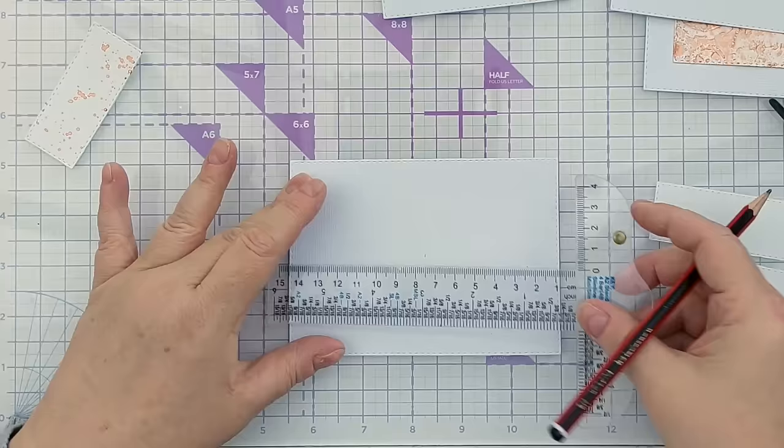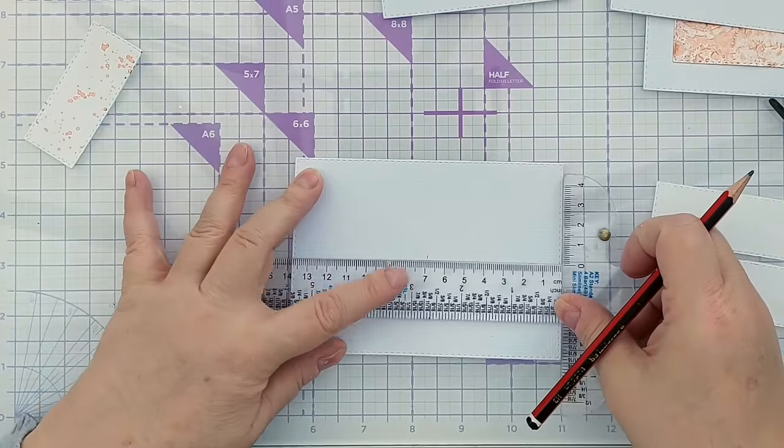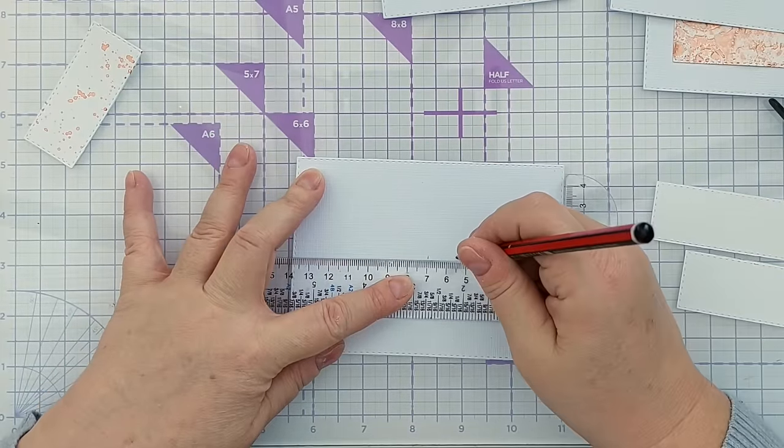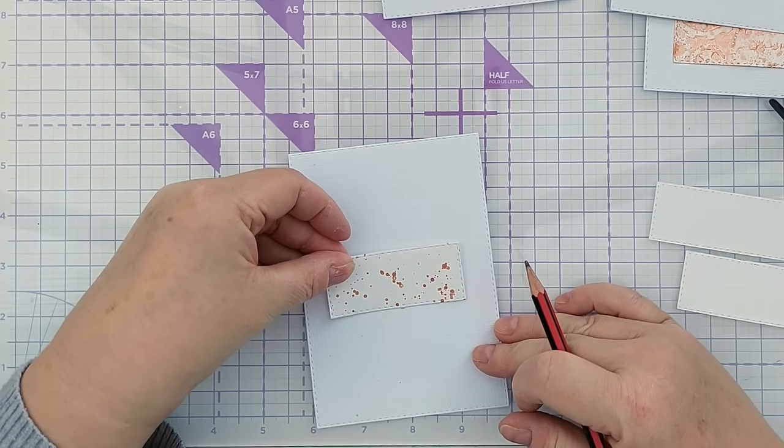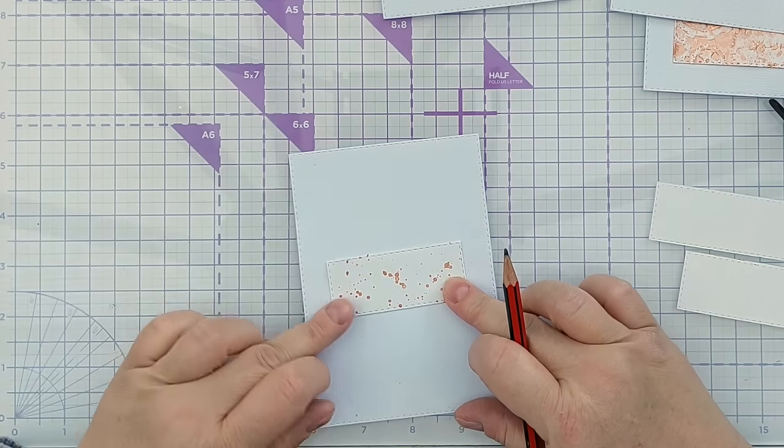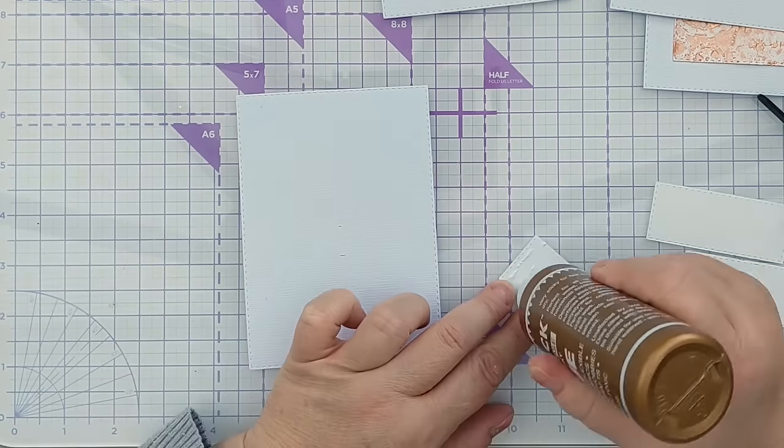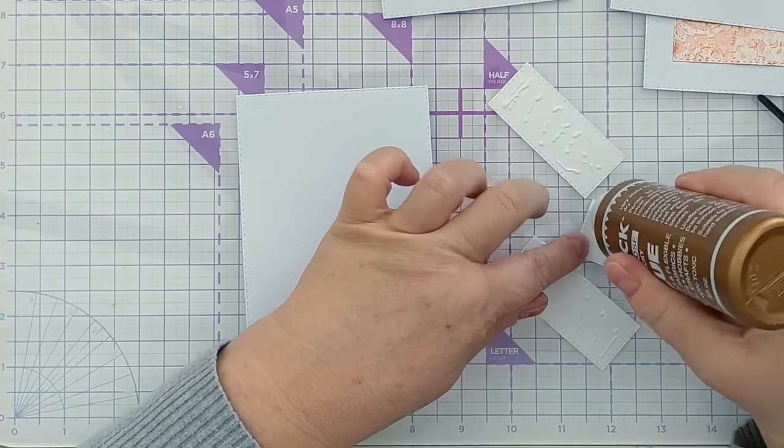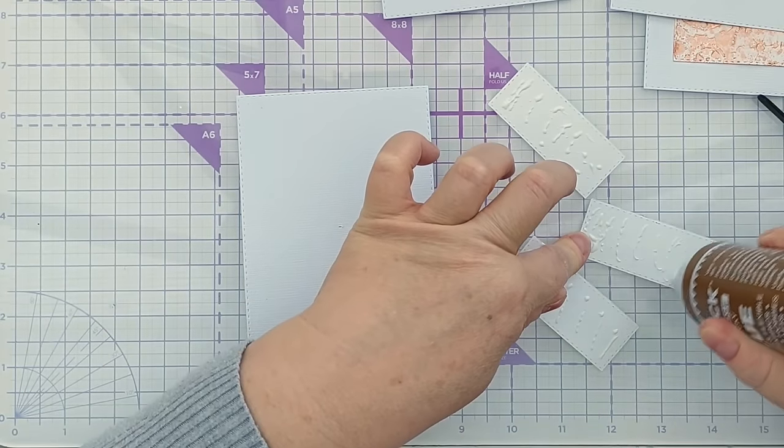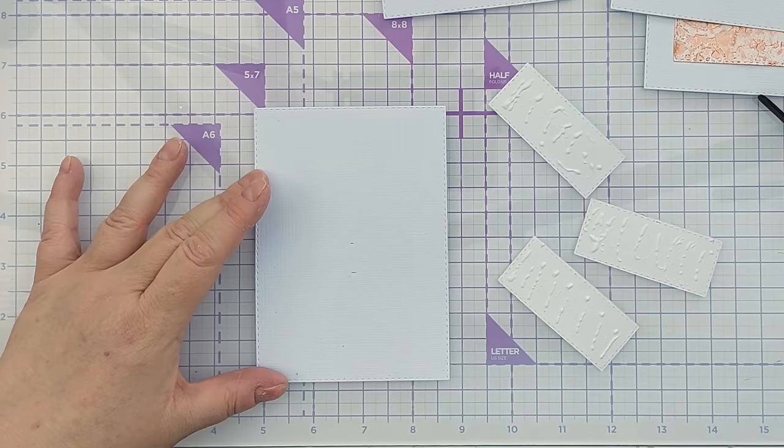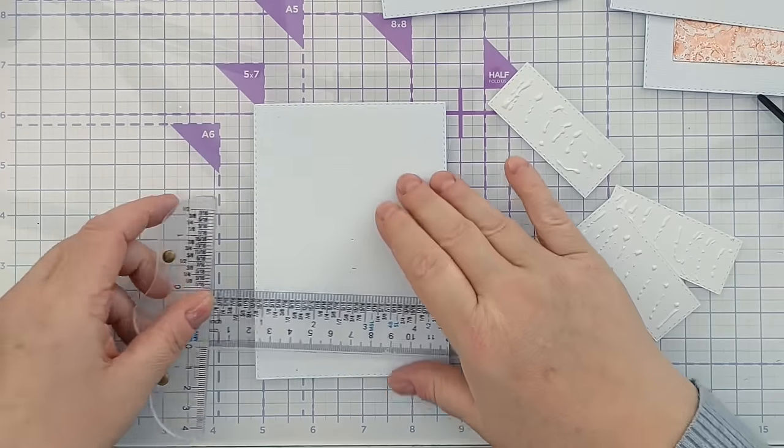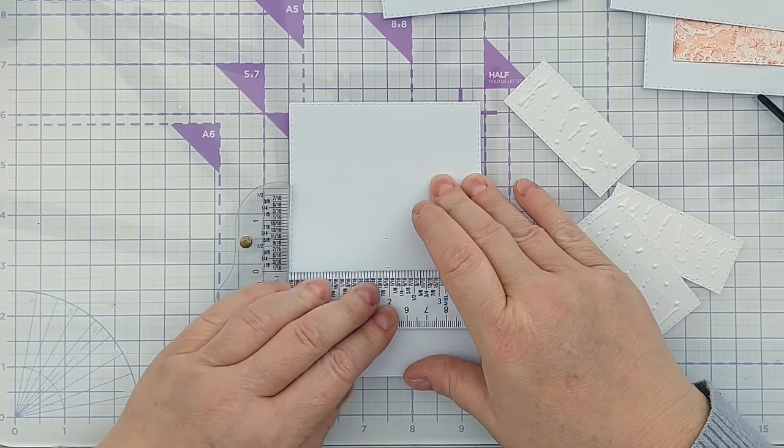I'm going to put a little pencil mark here to mark the middle of my bit of paper. I'm going to measure this - it's three centimeters, so I want to stick it one and a half centimeters below. When it comes to card making maths, I always do the maths in metric because I cannot for the life of me get imperial measurements right in my head.